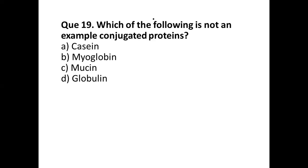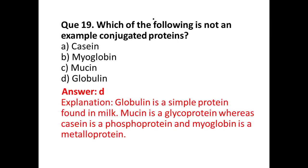Question number nineteen: which of the following is not an example of a conjugated protein? Options are: (a) casein, (b) myoglobulin, (c) mucin, (d) globulin. The correct answer is option (d) globulin. Globulin is a simple protein found in milk. Mucin is a glycoprotein, casein is a phosphoprotein, and myoglobulin is a metalloprotein.